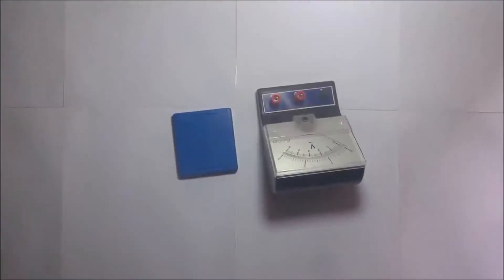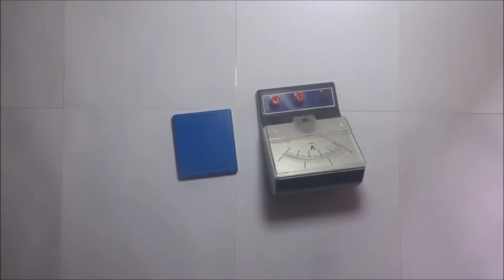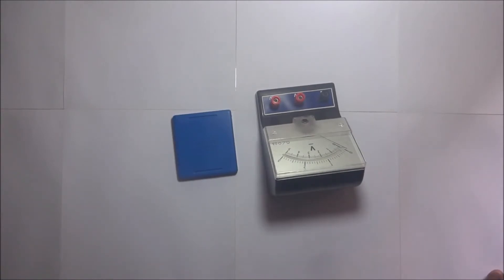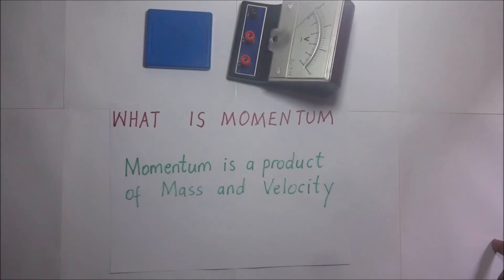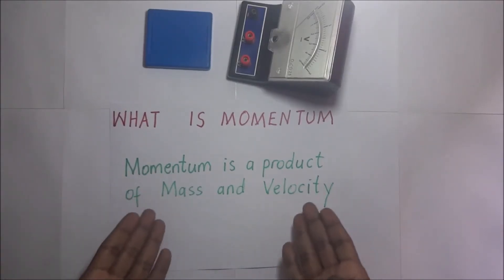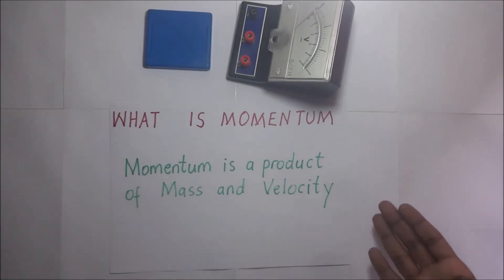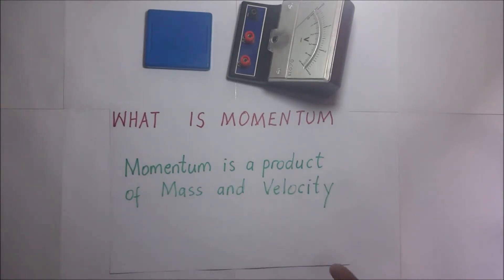Now we move to Newton's second law of motion. Understanding Newton's second law requires us to know what exactly momentum is. By definition, momentum is the product of mass and velocity. But what exactly does this mean? This is a mathematical statement — momentum is the product of mass and velocity.